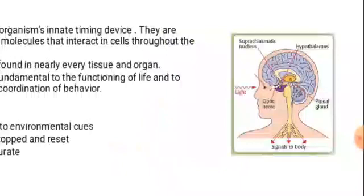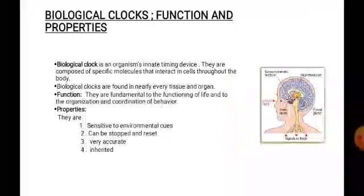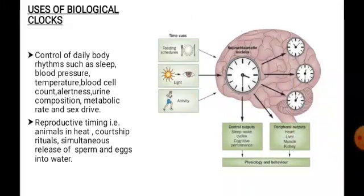This diagram shows how a biological clock — the suprachiasmatic nucleus — is sensitive to an environmental cue in the form of light, and transmits signals to all parts of the body to regulate its rhythms. Biological clocks can be stopped and reset, are very accurate, and are inherited from our parents. Biological clocks help to control our daily body rhythms such as temperature regulation, metabolic rate, urine composition, and sex drive.